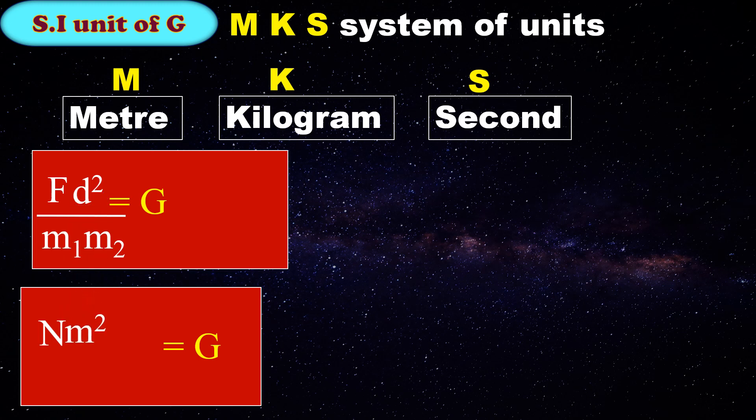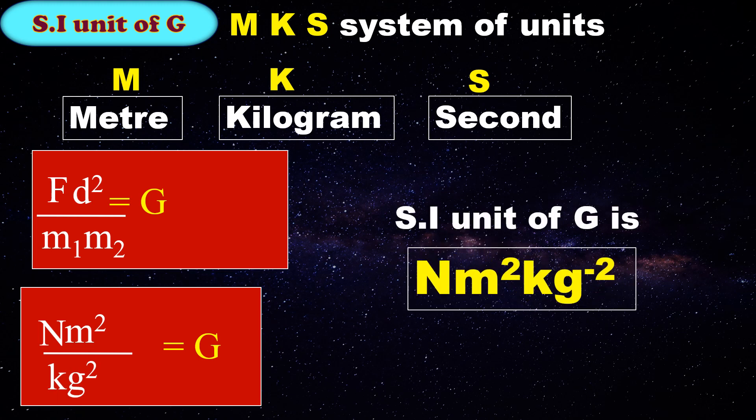Unit of distance is meter. Unit of mass is kilogram. Finally, the SI unit of G is Newton·meter² per kilogram².